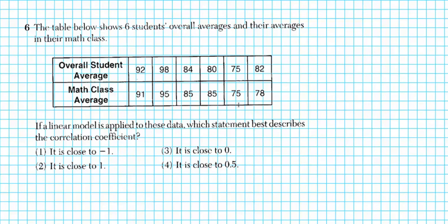It says the table below shows 6 students' overall averages and their averages in their math class. If a linear model is applied to these data, which statement best describes the correlation coefficient? So we're looking at linear regression right here. The linear regression is of the form y equals ax plus b. Now we're going to have to use our calculators here. When we calculate our linear regression using our calculator, r is our correlation coefficient. So this is the value that we're going to be paying close attention to.